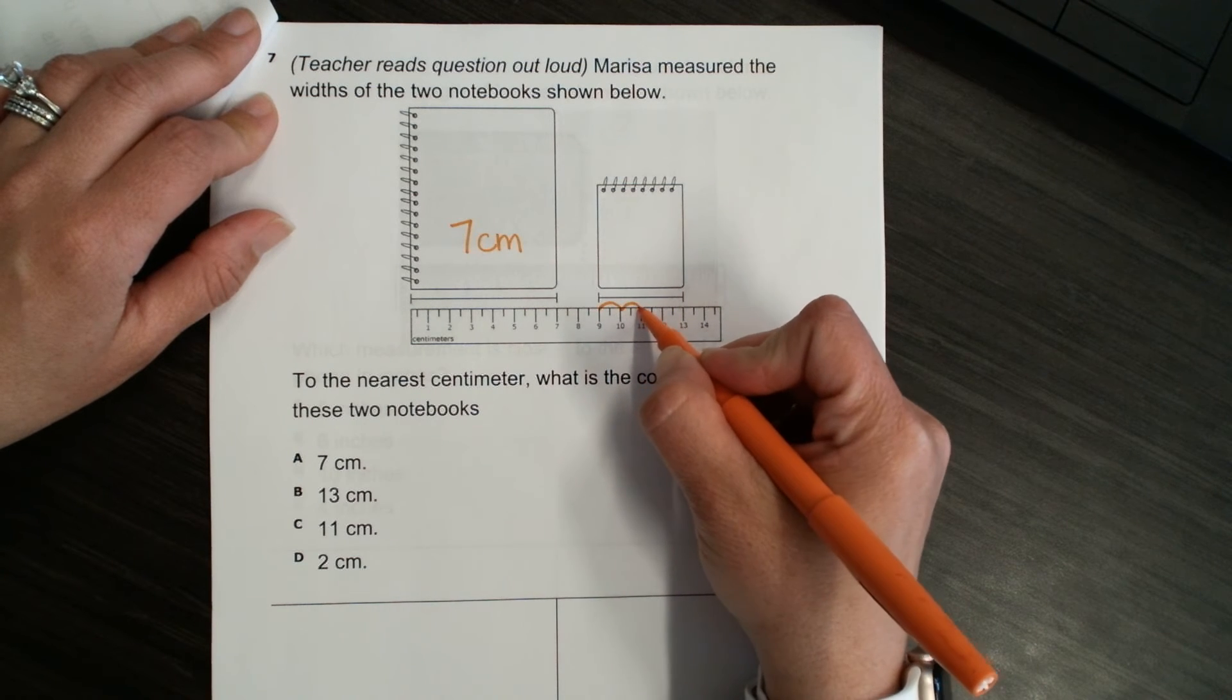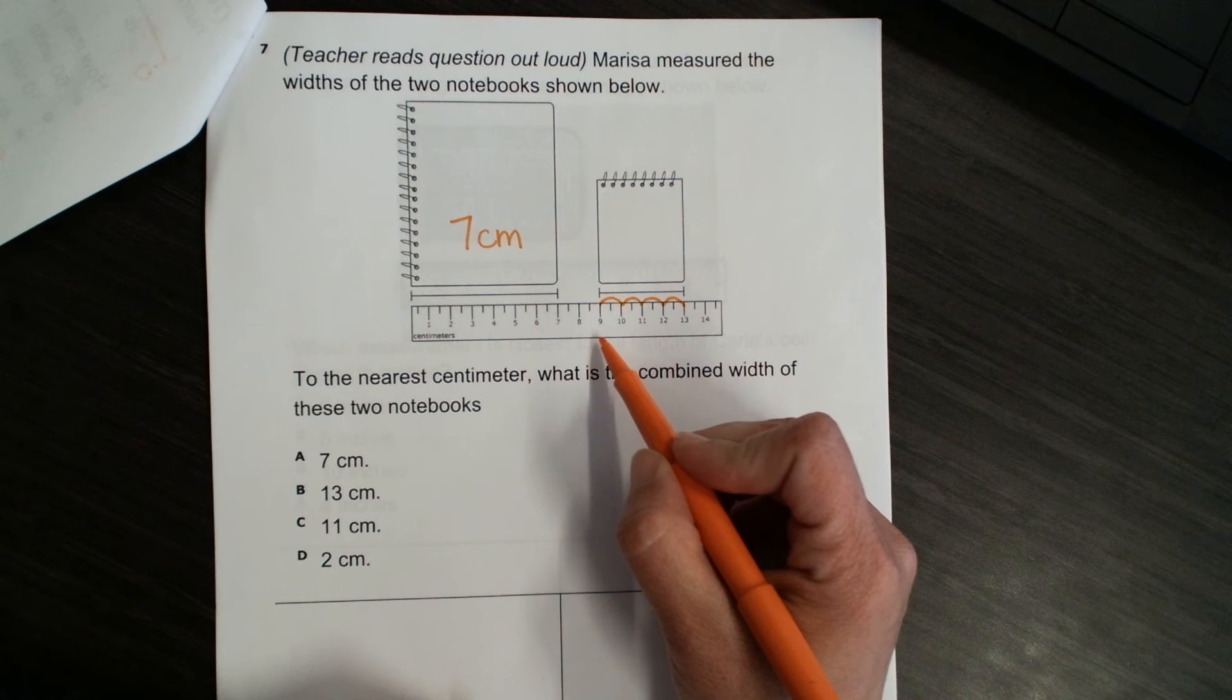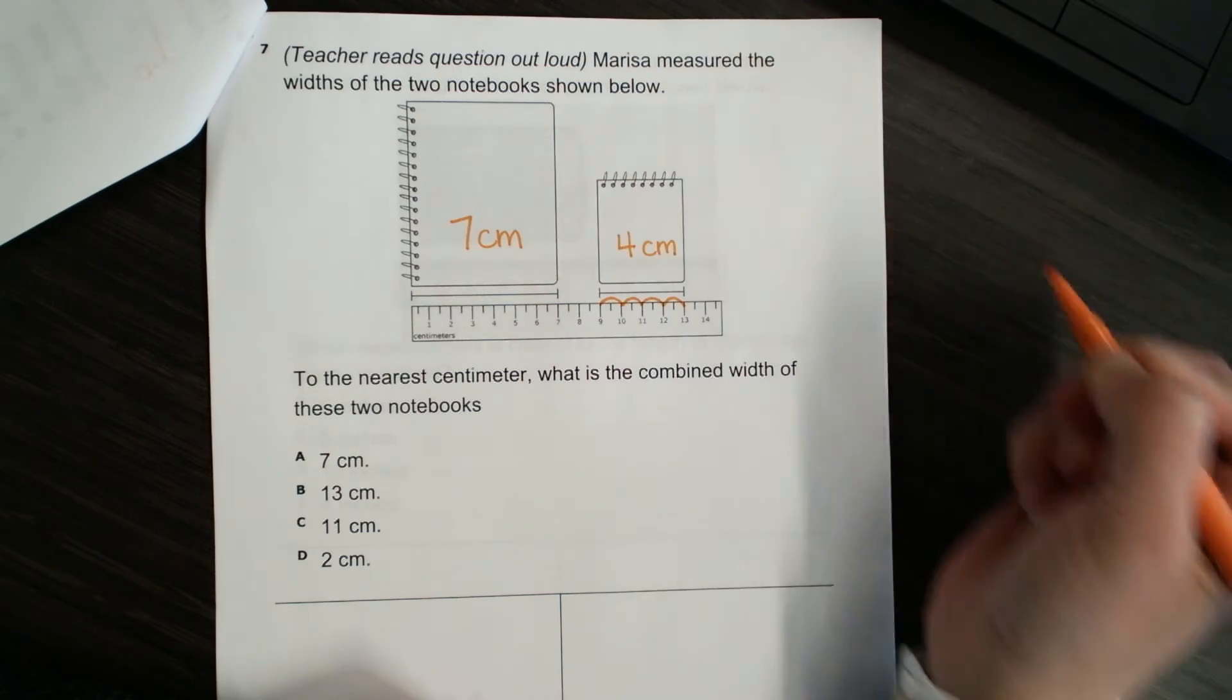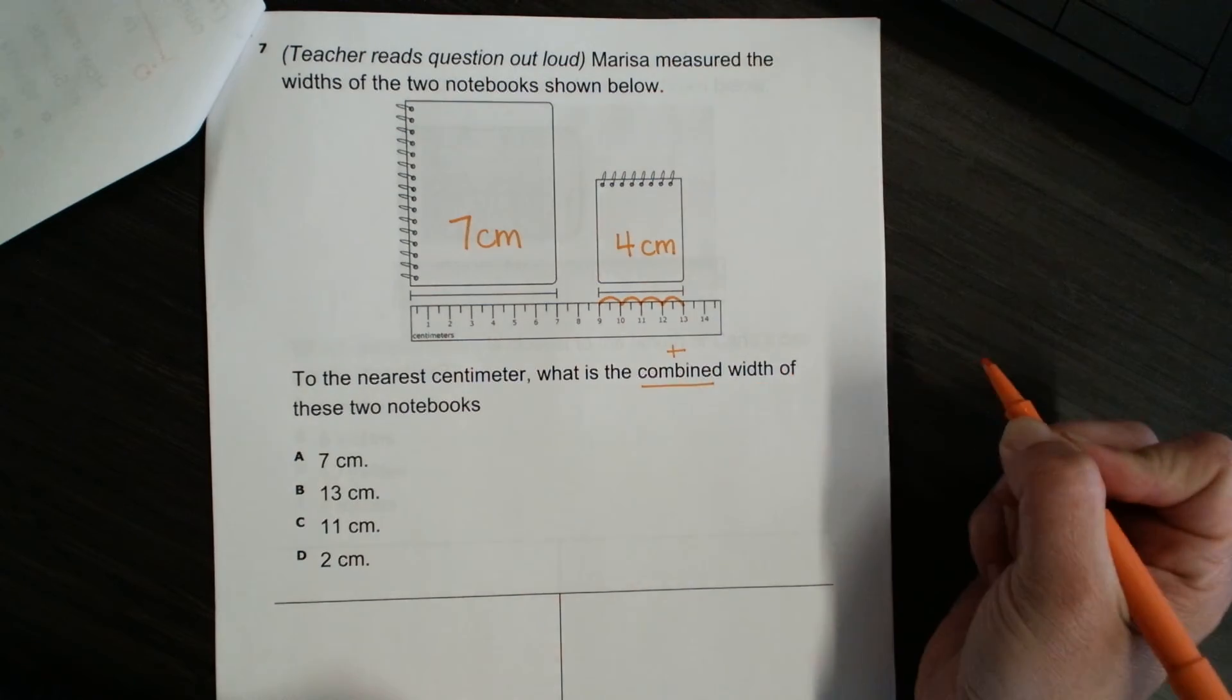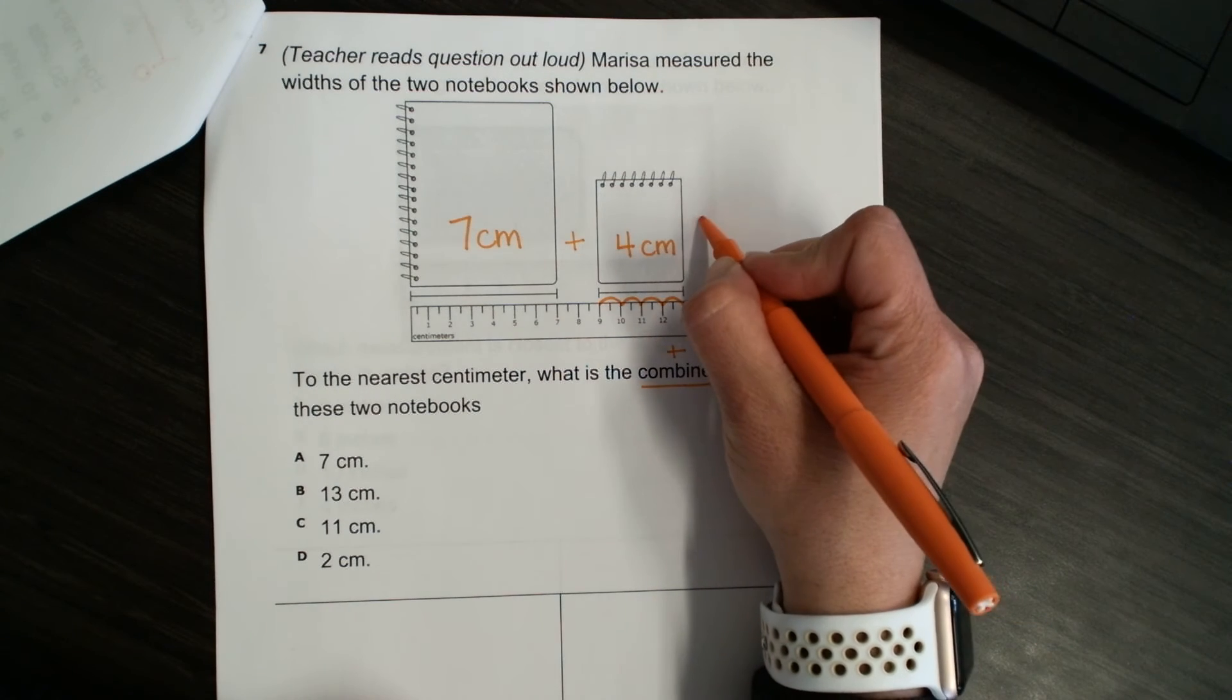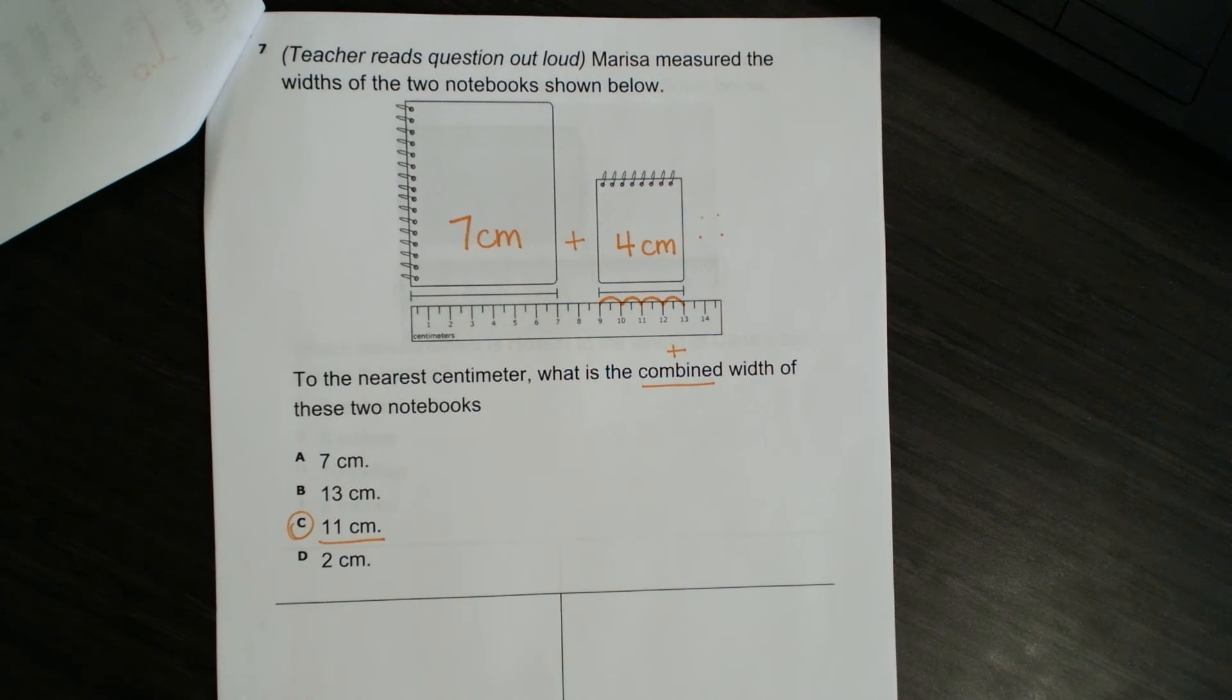two, three, four. So, between nine and 13, that is four jumps or four centimeters. Now, to combine, that means add, I have to do seven plus four. Seven, eight, nine, 10, 11. Okay. So, seven plus four is 11, and I will choose 11 centimeters.